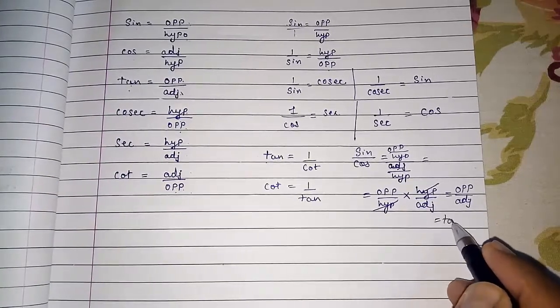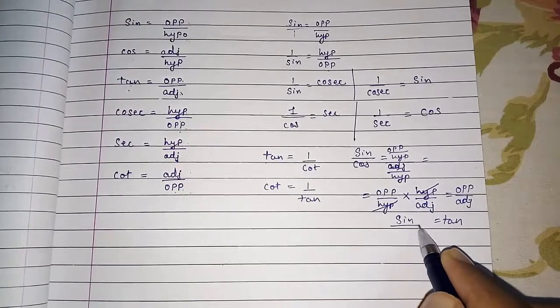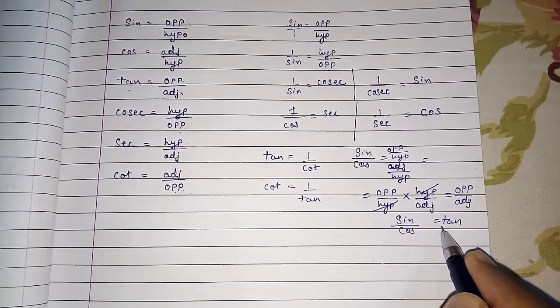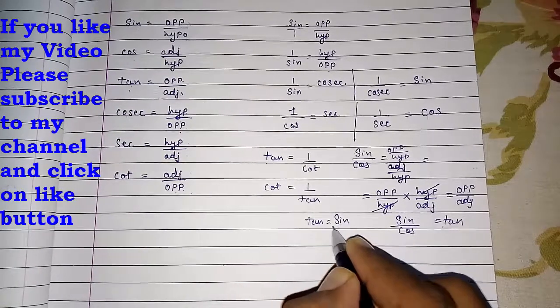So equals to tan. So directly I can write sin by cos equals to tan. Or you can say tan equals to sin by cos.